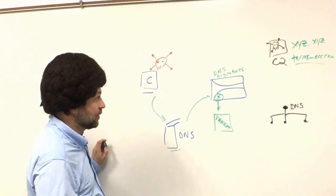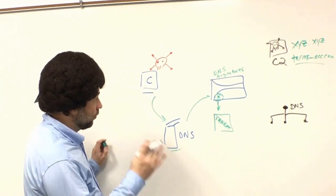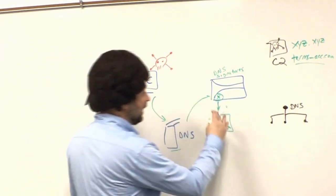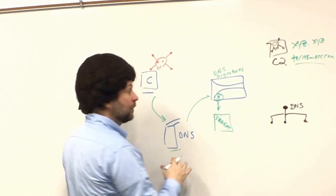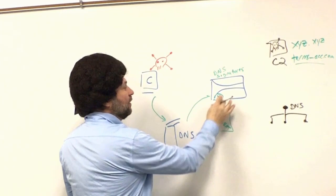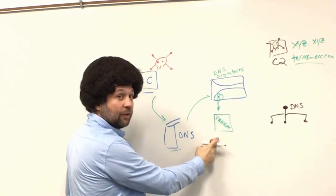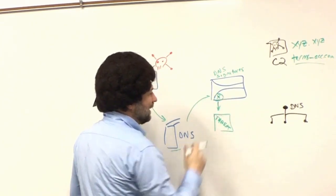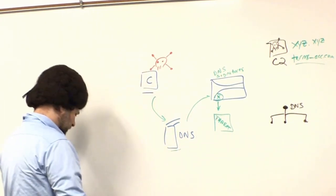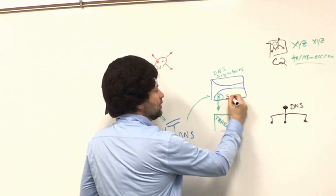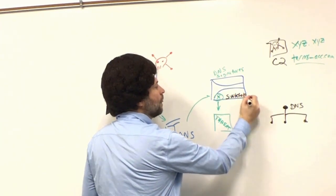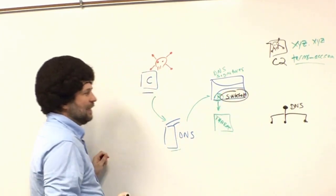This is what we're going to solve. We're going to change our action to sinkhole in our rule. Instead of just blocking and recording to the threat log, we're going to take a different action. What sinkhole does is tell the firewall to actually reply to this query.